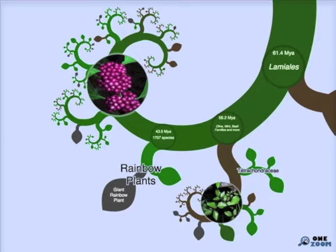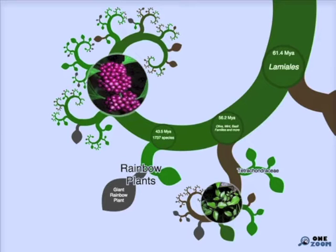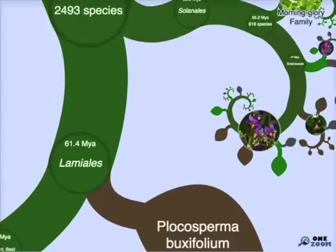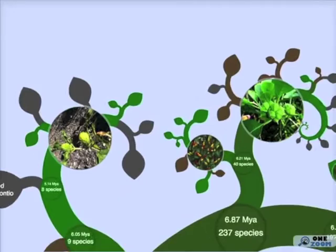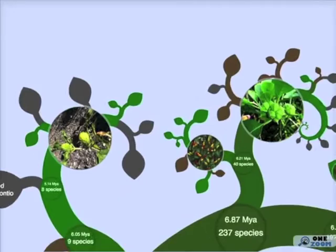Olives and jasmines join us next. Then at number 27, the Solanaceae join us. This is an interesting group because inside it are the plants containing potatoes, aubergines, tomatoes, and peppers — including chilli peppers. So many of my favourite foods actually join us here.